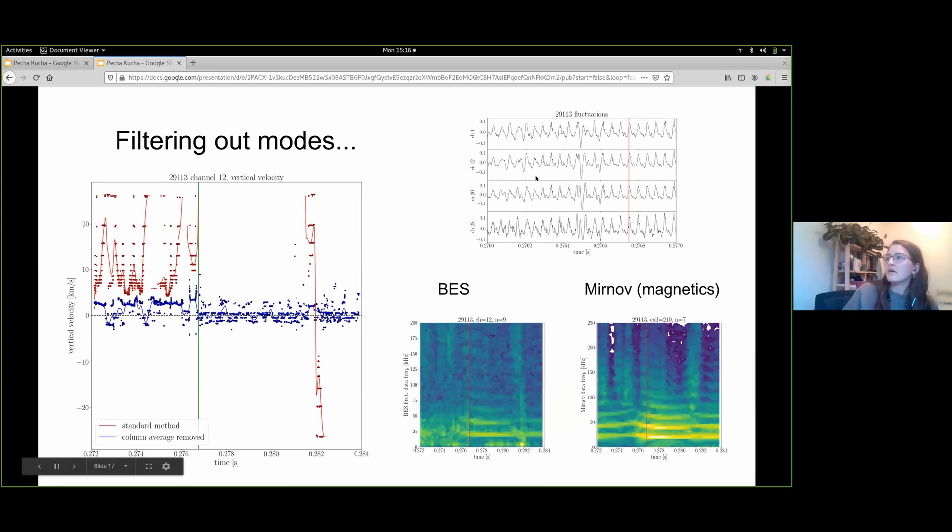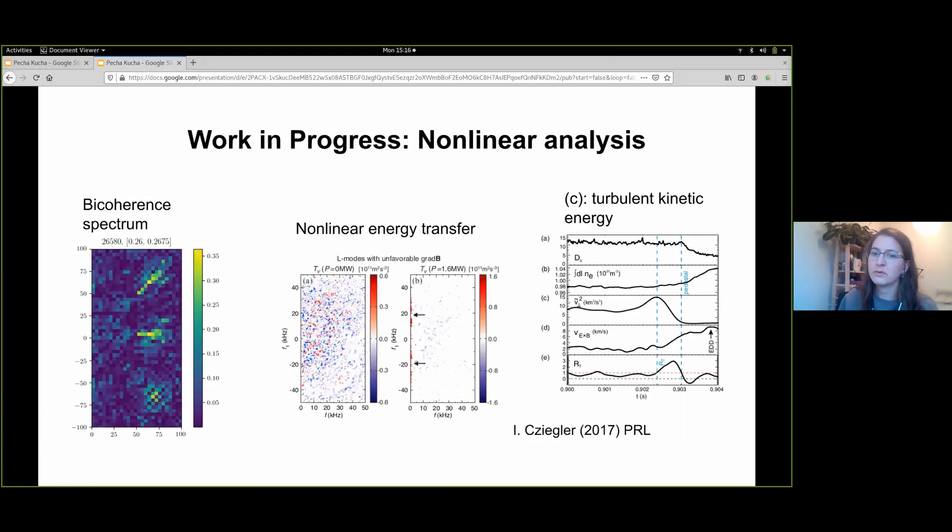These modes can be filtered out, especially well if the channels are aligned with the flux surface as in double-null configurations, by removing the column average from the data and retrying the analysis to return the velocities that are actually of interest.